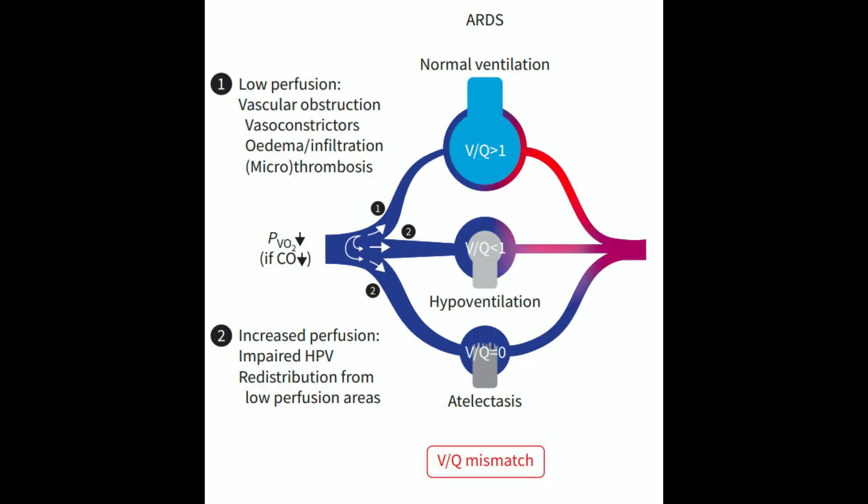In ARDS, there is a disbalance of vasoconstriction in well-ventilated areas and vasodilation in poorly ventilated areas, primarily due to the inhibition of HPV. This imbalance leads to the redistribution of blood flow from well-ventilated alveoli to poorly ventilated alveoli, resulting in a V/Q mismatch — a significant contributor to the low oxygen levels, hypoxemia, seen in ARDS patients.